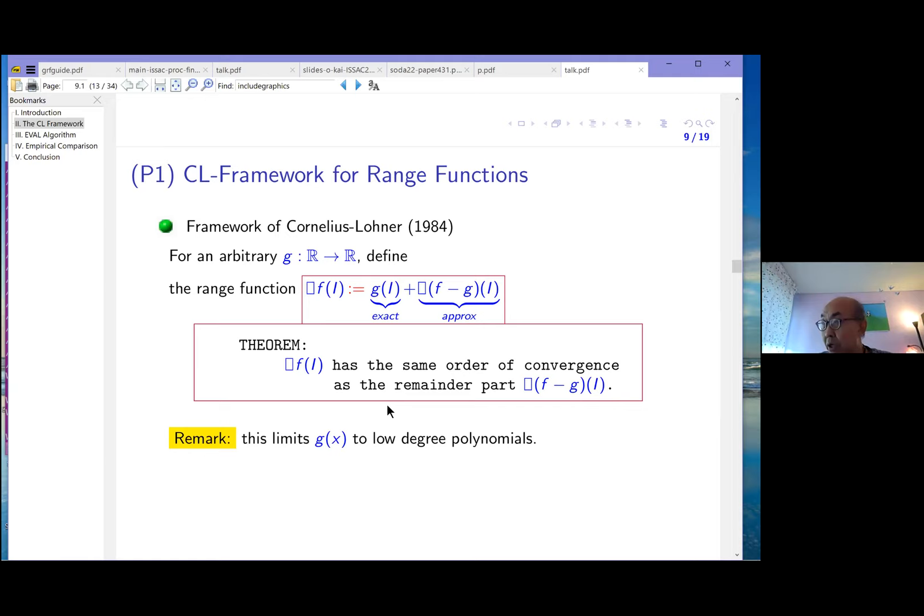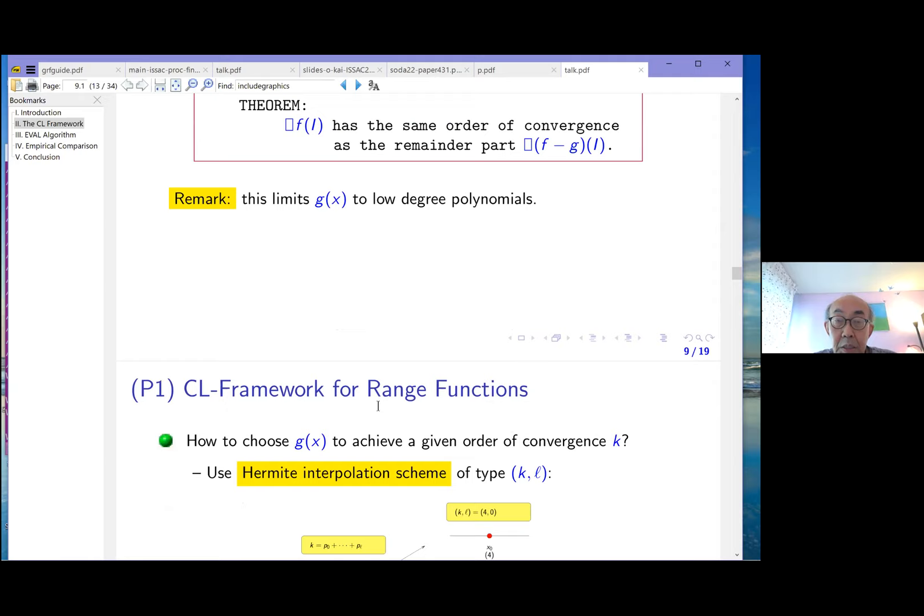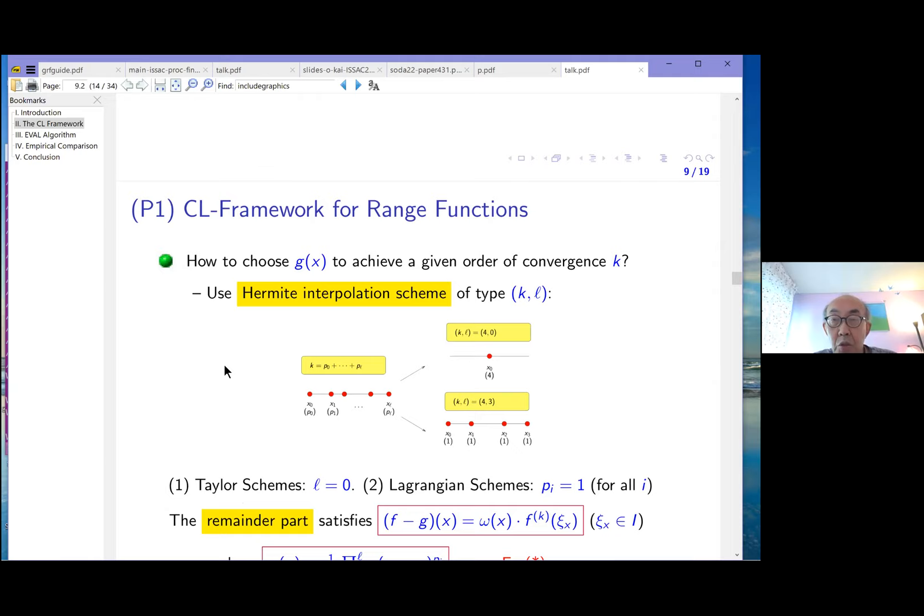The fact that g of I has to be exact kind of limits application of this theory to low-degree polynomials. CL mentioned that maybe five or six is the limit. So given that framework, how do we choose g to achieve any given order of convergence k? You have to remember that until the CL paper, interval people worked very hard to produce order of convergence greater than 2. There might be examples of k equals 3 or something, but there's no general framework to do beyond second order convergence. This theory is actually very nice. It introduces a whole new class of range functions in interval analysis.